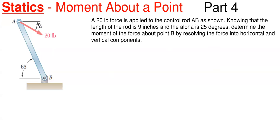Knowing that the length of the rod is 9 inches, this alpha angle up here is 25 degrees, we need to determine the moment of that 20 pound force about point B, which is down here at the bottom, by resolving the force into a horizontal and vertical component.